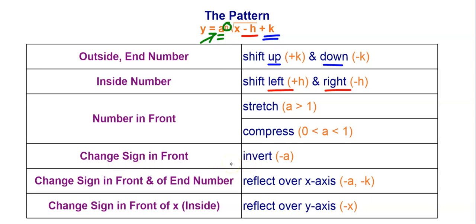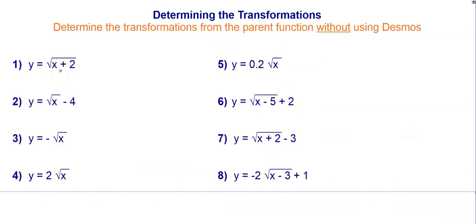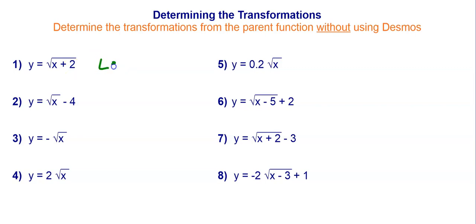You can also reflect over the x-axis and y-axis, but just like when we did the other functions, it's hard to tell if you're using those or a combination of the ones above, so we typically use the ones above to describe transformations. You can describe transformations just by looking at the equation without using a graphing utility. For example, a plus 2 inside means moving to the left two spots.